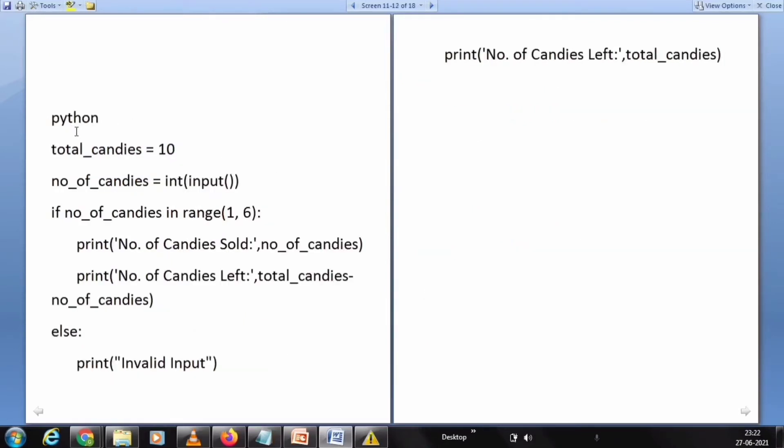The same program for Python is given as: total number of candies equals 10. Number of candies equals int input. Give the input of number of candies. If number of candies is in range between 1 to 6, then print number of candies sold, that is number of candies, and print number of candies left. Else, print invalid input and print the number of candies left. We have seen four different ways to write the same program in C, C++, Java, and Python.